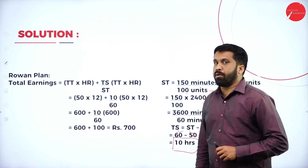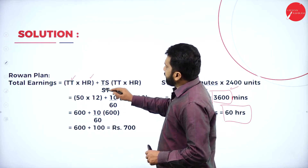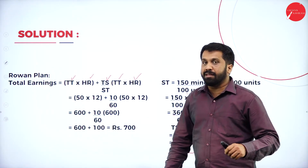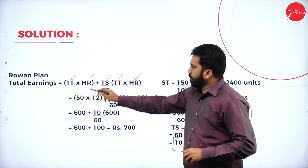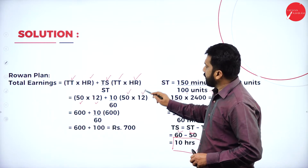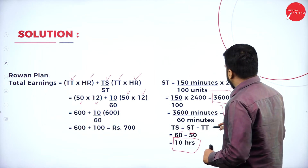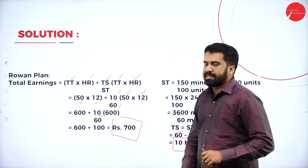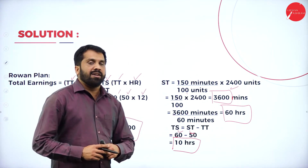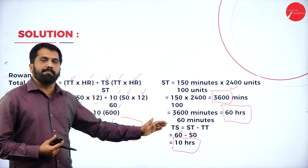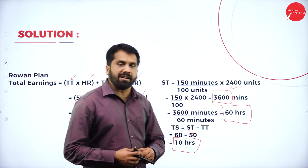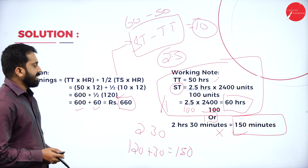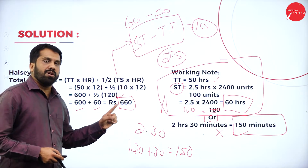Now for the Rowan plan. The formula is: Total earning = (Time taken × Hourly rate) + (Time saved ÷ Standard time) × Time taken × Hourly rate. Time taken = 50, hourly rate = 12, time saved = 10, standard time = 60. Solving this gives 700. The company can choose either the Halsey plan (660) or the Rowan plan (700).